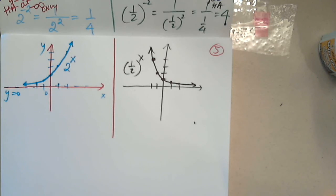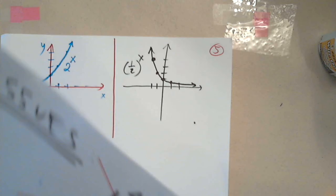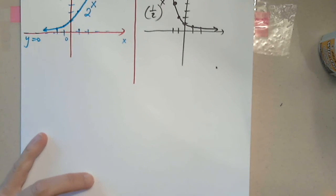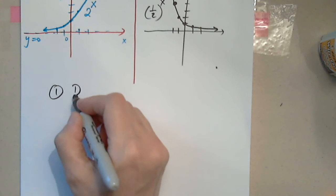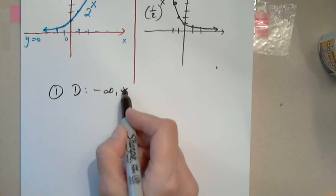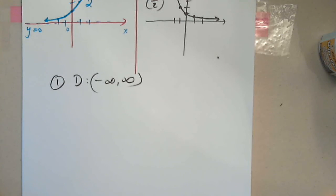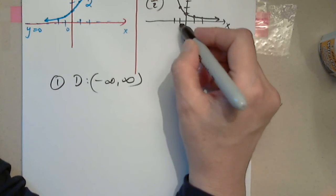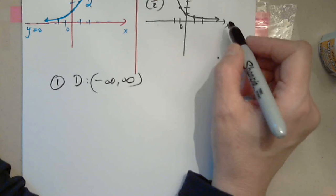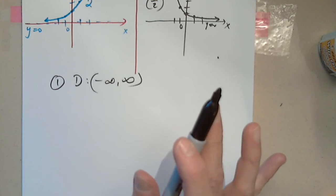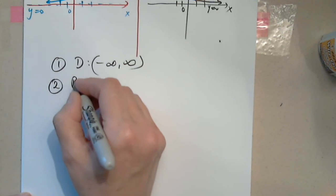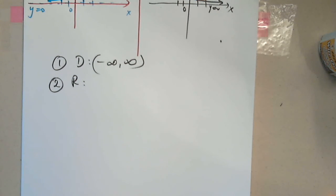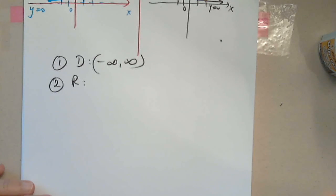Looking at both graphs, let's answer a couple of questions. Number one: domain. Both functions have a nice domain — friendly functions, no problems. They exist everywhere. Number two: range. The range is zero to infinity — so 0 to positive infinity for the pure exponential function.